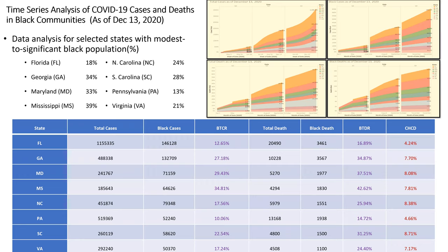Our experiment was run as of December 13, 2020. The time series analysis of COVID-19 cases and deaths in Black communities was based on selected states with modest to significant Black populations. The states considered include: Florida at 18% Black, Georgia at 34%, Maryland at 33%, Mississippi at 39% Black, and North Carolina at 24%.